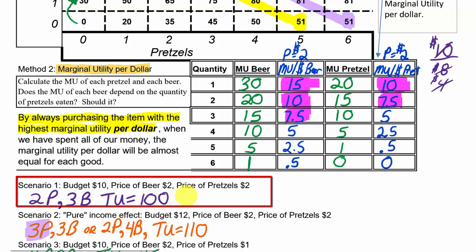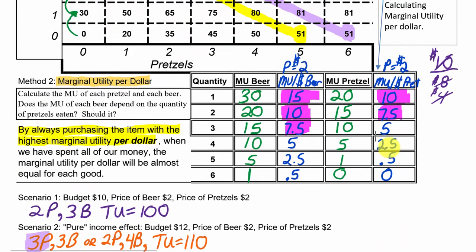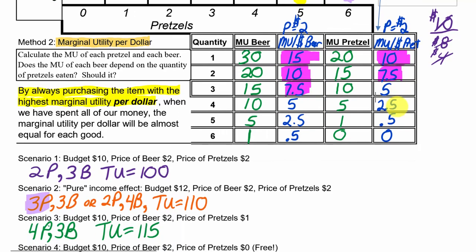Let's double check. Without the total utility table, how would we verify two pretzels and three beers gives 100 happiness using this kind of table? We add up the additional utility each purchase gives us. Three beers: 30 plus 20 plus 15 equals 65 happiness. Two pretzels: 20 plus 15 equals 35 happiness. 65 and 35 gives total utility of 100. We got the same prediction using both methods.